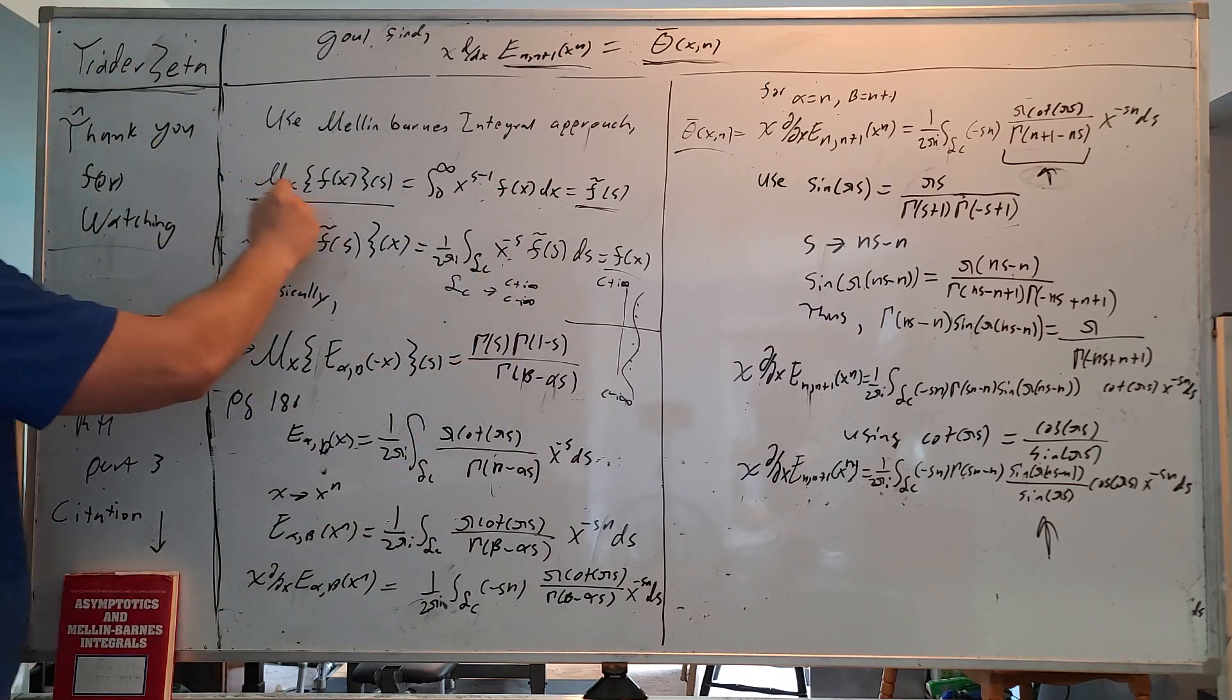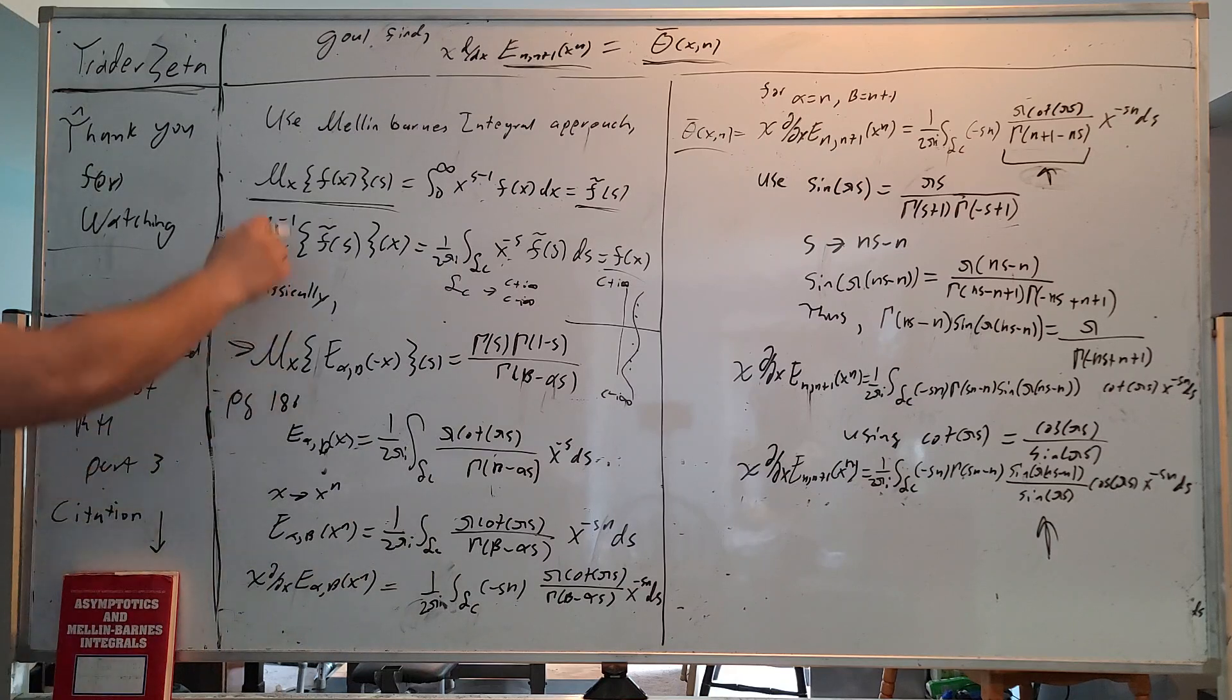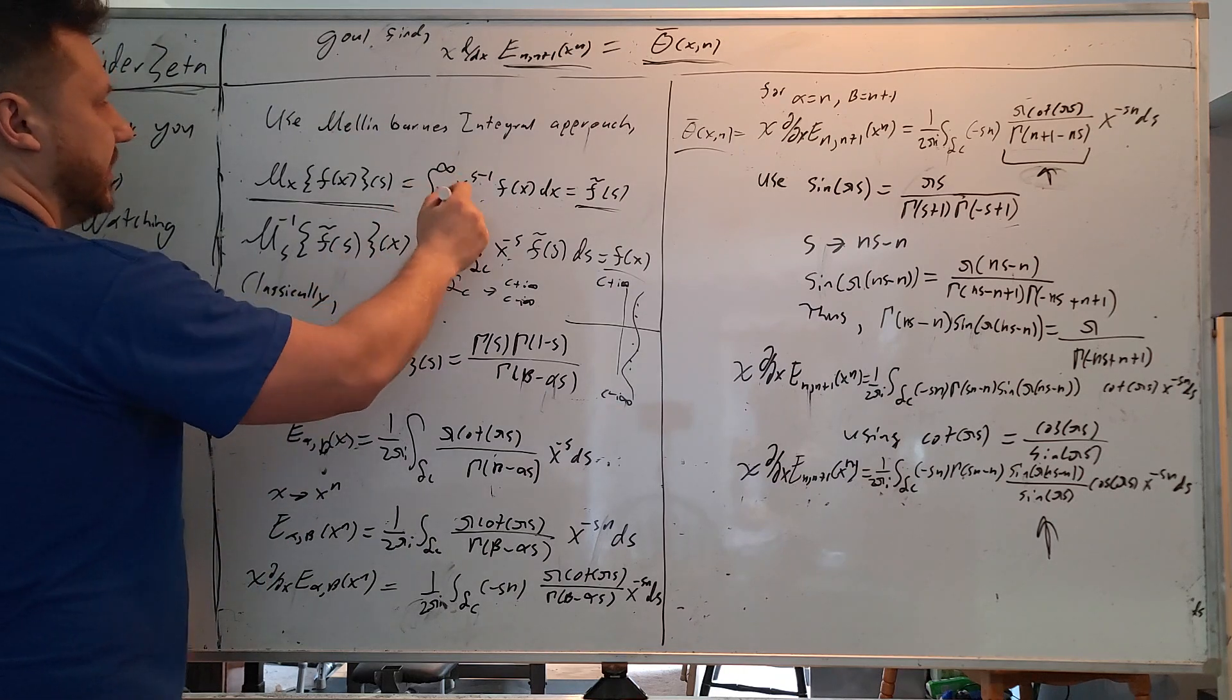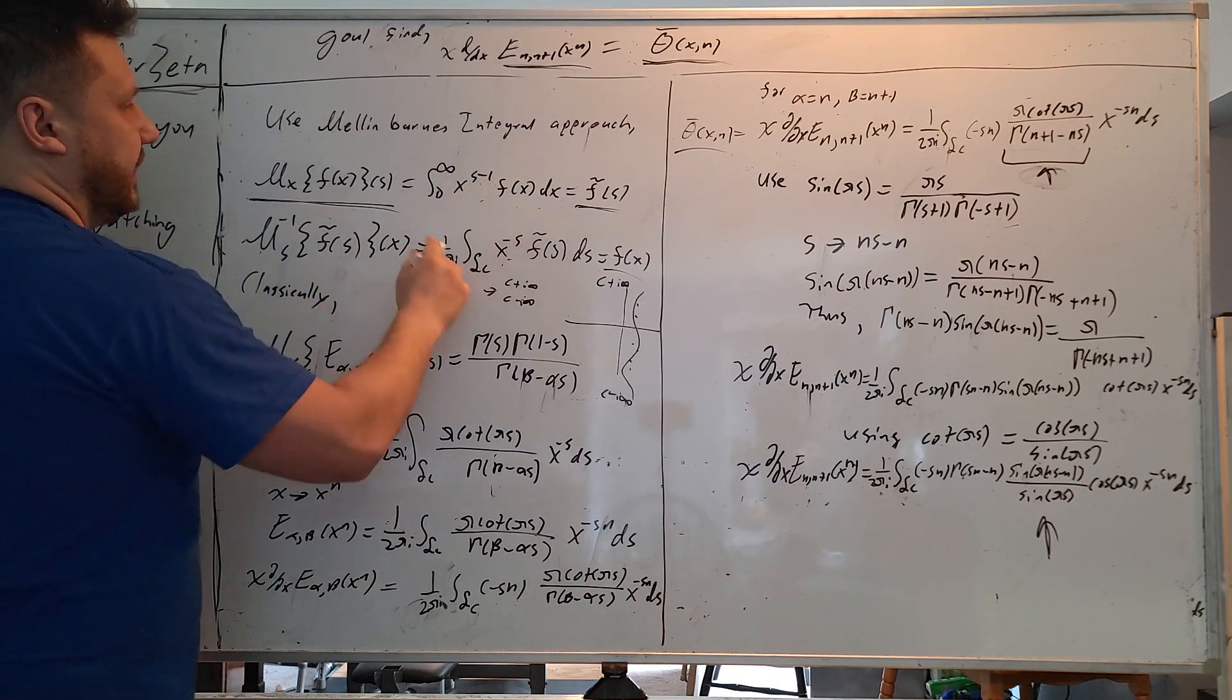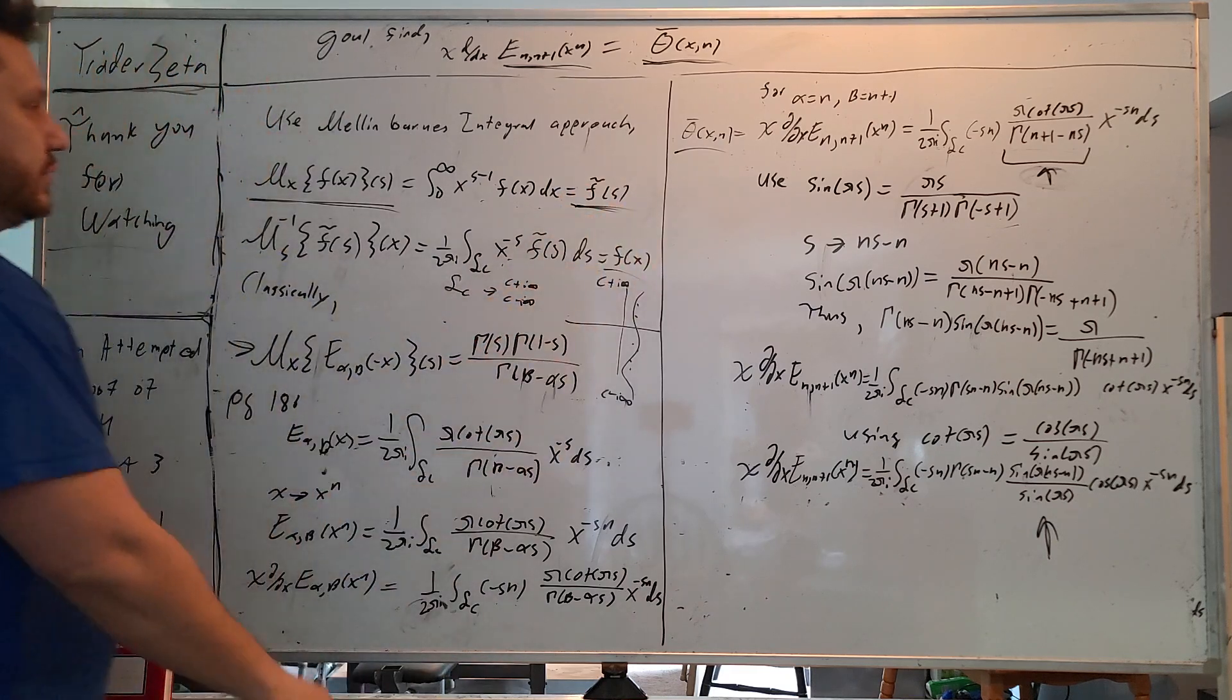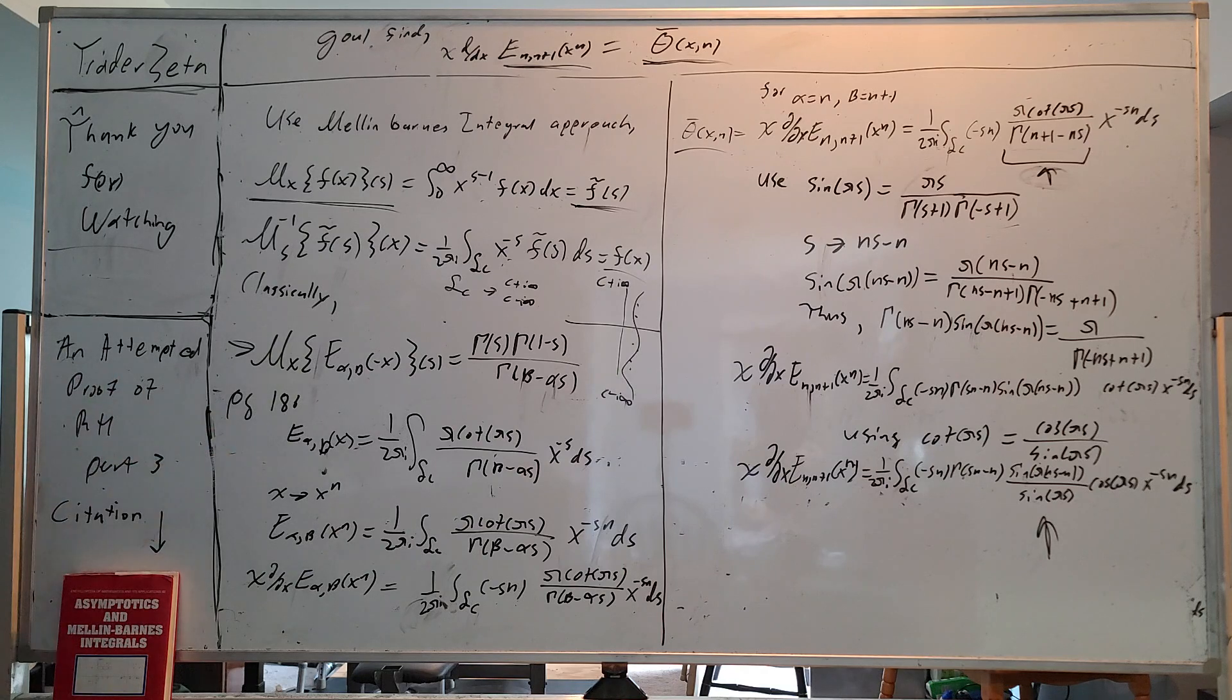In order to understand this approach, you have to understand the Mellon transform first. It is defined here. You have m sub x of f of x going to some complex variable s. And the integral transform is defined as integral 0 to infinity x to the s minus 1 f of x dx, which gives you the transformed function of a complex variable.